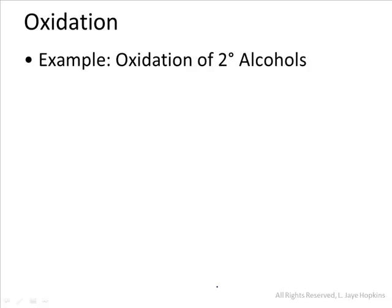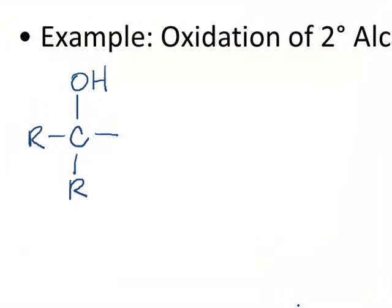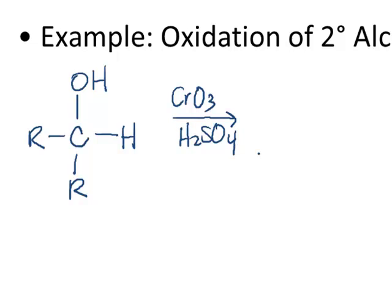Let's start by doing an example of what happens when we oxidize a secondary alcohol. By definition, an alcohol is a carbon single bonded to an OH group. A secondary alcohol means that the carbon will be attached to two R groups. Because carbon has to have a total of four single bonds, that means our remaining bond must go to a hydrogen. If we oxidize a secondary alcohol using chromate in the presence of sulfuric acid, we form the carbonyl group. I want to show you a fake mechanism that will help you remember this.